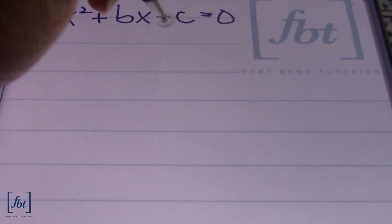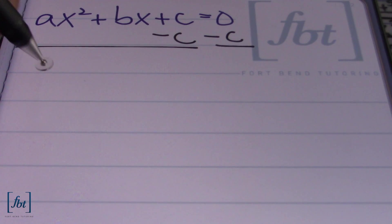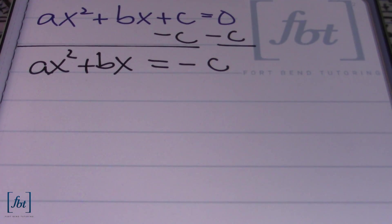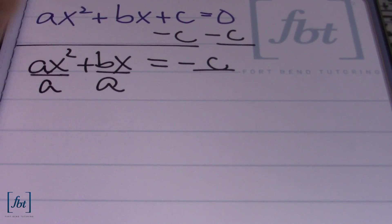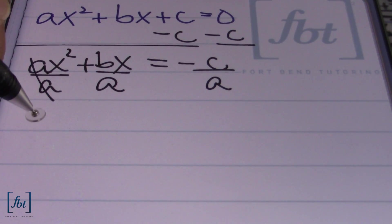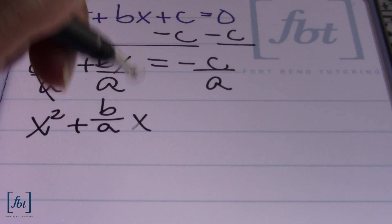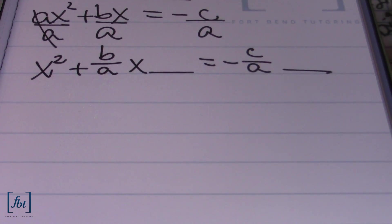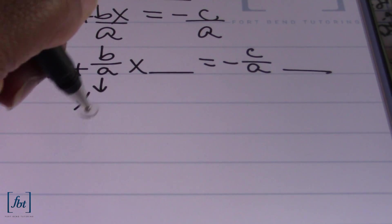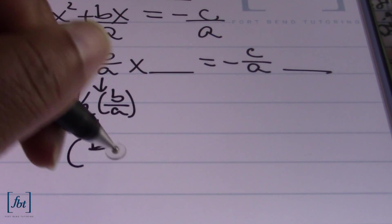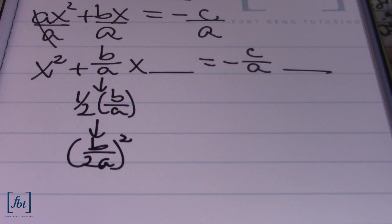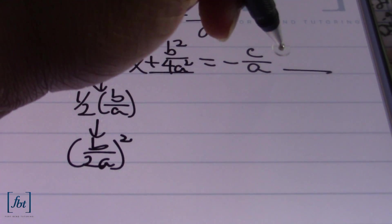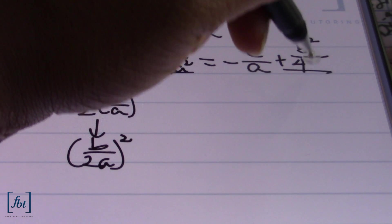The first thing I want to do is subtract c from both sides of the equal sign. We'll end up with ax squared plus bx equals negative c. I definitely want my first coefficient to be 1, so I'm going to divide each and every term by a. We end up simplifying the left side to give us x squared plus b over a times x, and on the right side negative c over a. Your next step is to take half of the middle term's coefficient: taking half of b over a gives us b divided by 2a, and then you square it to get b squared over 4a squared. Add that to both sides of the equal sign.